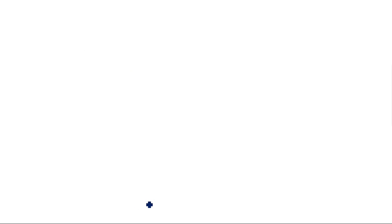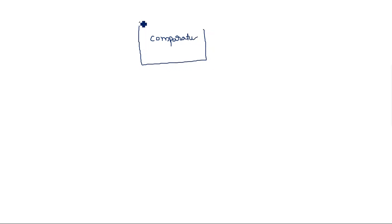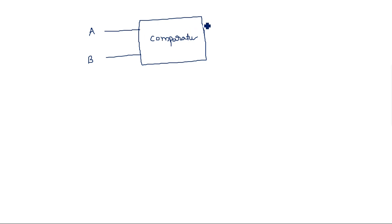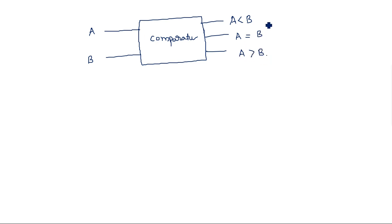Simply, a comparator compares two bits of information, A and B, where A is a single bit and B is a single bit. It gives three different outputs: one is A less than B, the second is A equal to B, and the third is A greater than B. These are the three possible combinations we can encounter when comparing two bits.